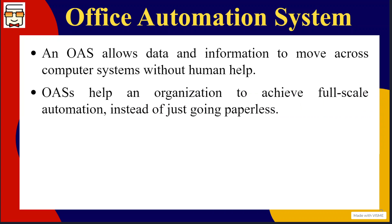An office automation system helps an organization to achieve full-scale automation. That means it is not only restricted to removal of paperwork or documentation in hard copy form, but it also involves automating all the processes and sub-processes happening within an organization such that humans are only involved unless there is no substitute for them. For example, automating the entire recruitment process is possible through an OAS such that human help would be required only for the interviewing part — the rest can be handled by the OAS itself.